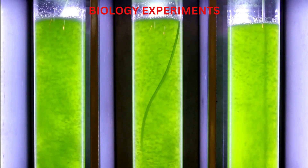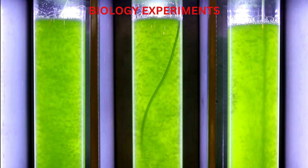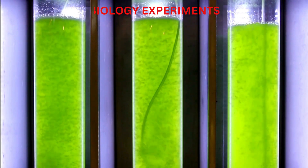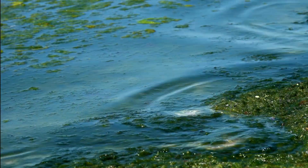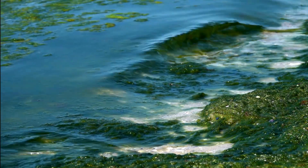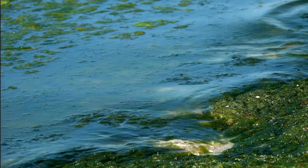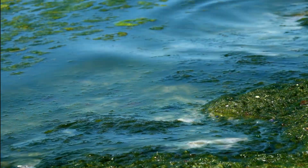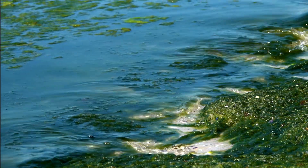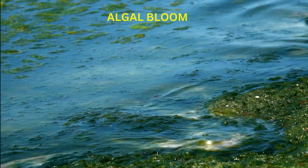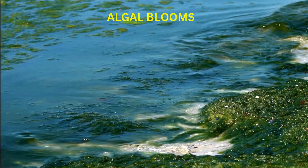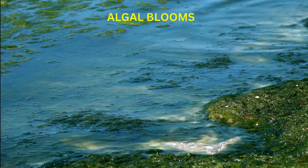While Spirogyra is generally harmless and serves important ecological functions, excessive growth of algae, including Spirogyra, in water bodies can lead to issues such as algal blooms, which may have negative impacts on water quality and aquatic ecosystems.